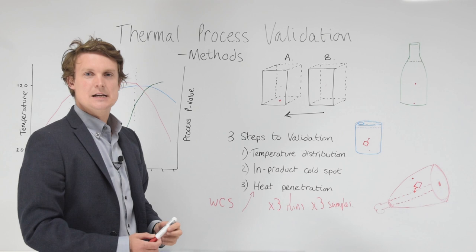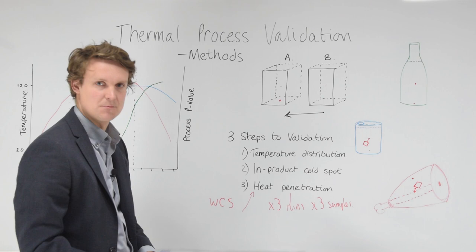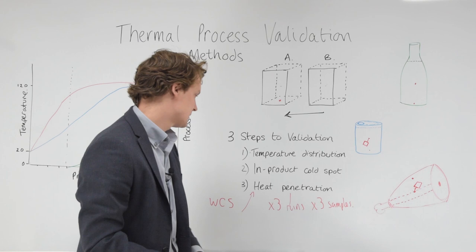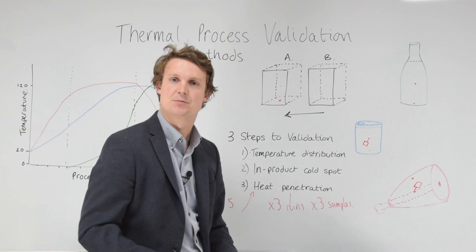We've understood all our variables. We then do, ideally, three runs, three replicate runs of heat penetration, where we're actually putting our final validation samples probed up through the process. What we recommend, and what's generally expected, is three runs with three samples on each run. Alternatively, we could do two runs with ten samples, if that's more practical.